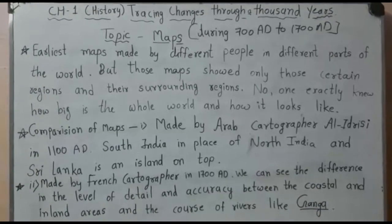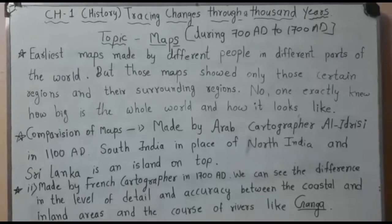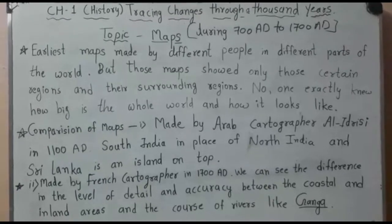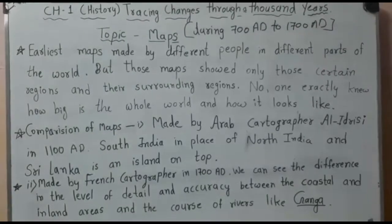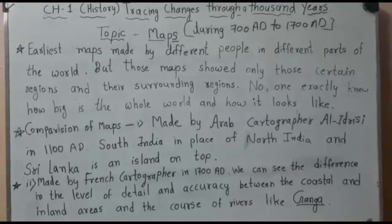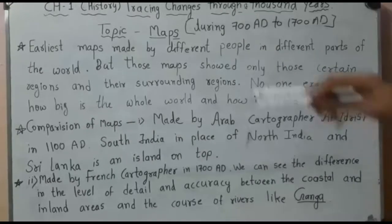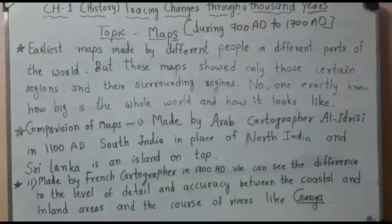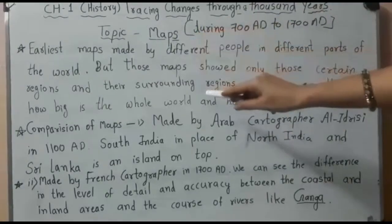People didn't know what size the earth was. They didn't know about different physical features, political boundaries, seas, oceans, and so on. So whatever they knew, they showed briefly in the map. Earliest maps made by different people in different parts of the world may not look regular from our point of view today.